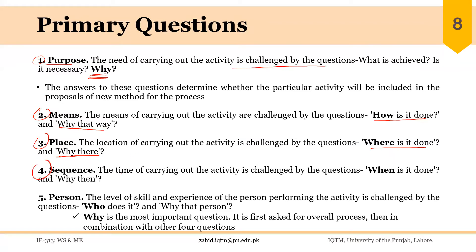Then we question the sequence: when is the activity done, which activities come before and after it, and why this specific sequence is being followed? Finally, we question the person: what is the level of skill and experience of the person performing the activity, who does it and why that person, and is he or she the best person to perform this activity? Now, 'why' is the most important question. It is first asked for the overall activity, and then in combination with the other four questions — why it is done in a certain way, by a certain person, at a certain place, or in a certain sequence.